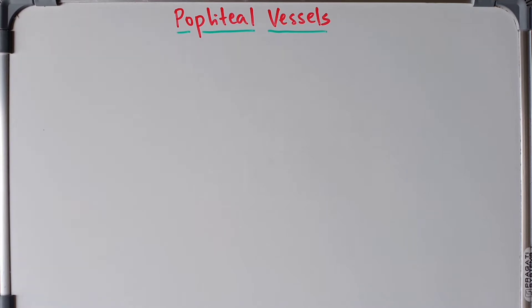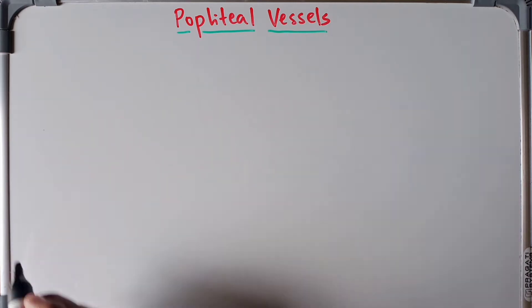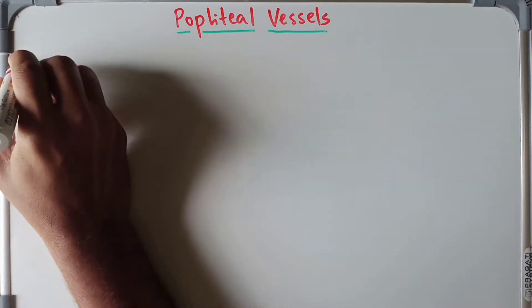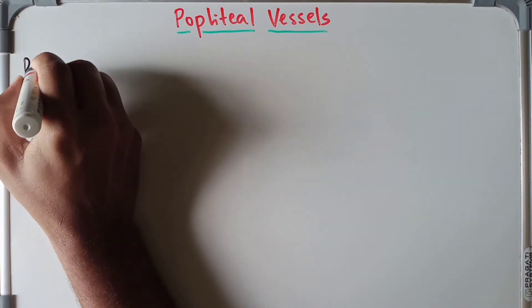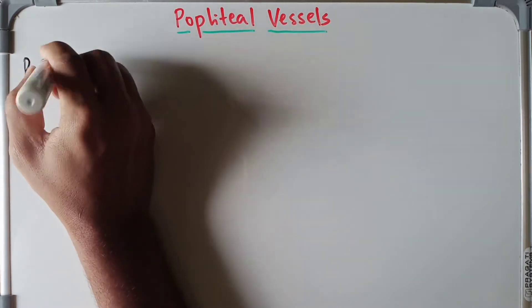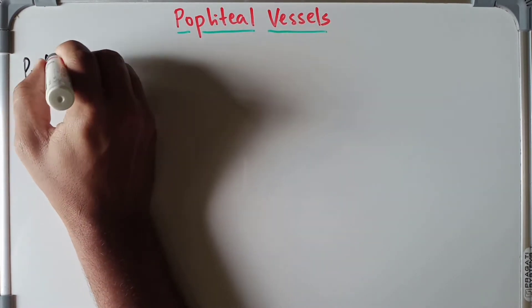In this video we are going to discuss the anatomy of the popliteal artery as well as the popliteal vein. Let me begin with the popliteal artery. The popliteal artery is a continuation of the femoral artery.